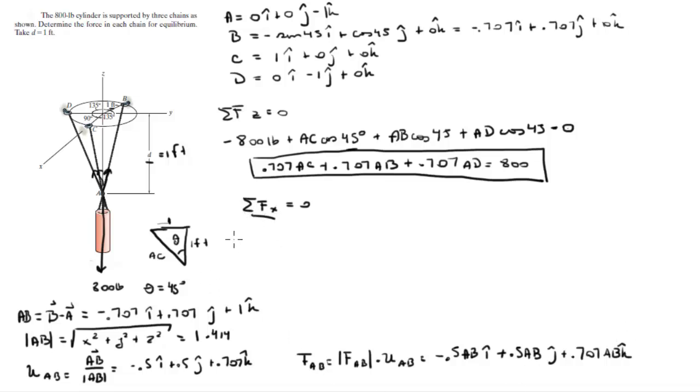So back to here, sum of the forces in the x is equal to 0. In the x we have this force which is given by AC sine of 45 degrees minus the x component of AB, which is this little arrow right here aiming straight back in the x, that's why it's minus. So it's minus 0.5 AB which we got from this vector, and that equals 0. In conclusion, you solve for AC and you get that AC is equal to 0.707 AB.